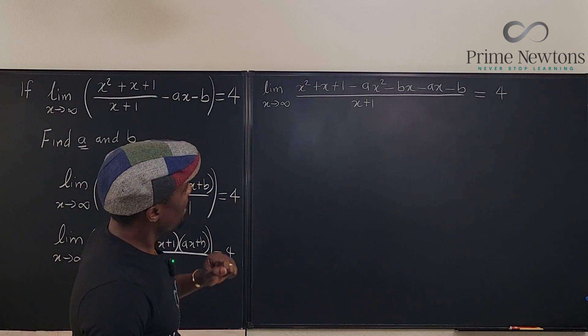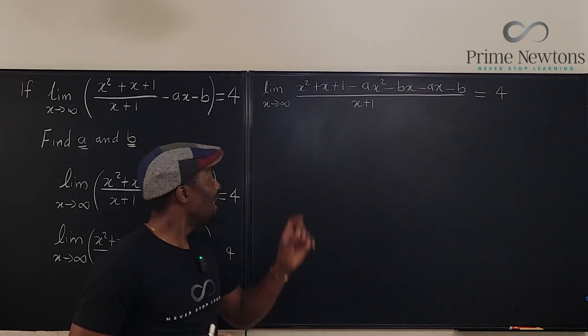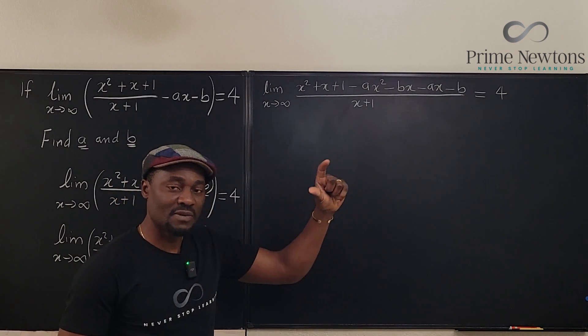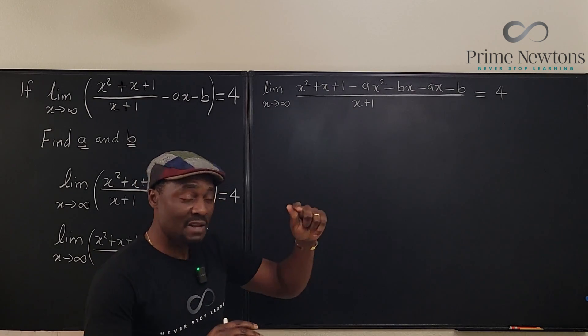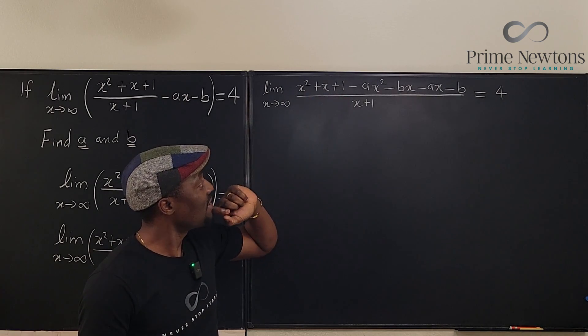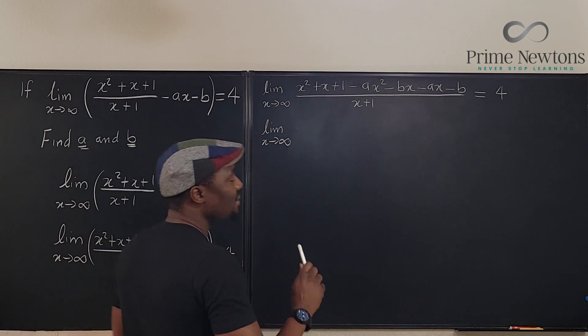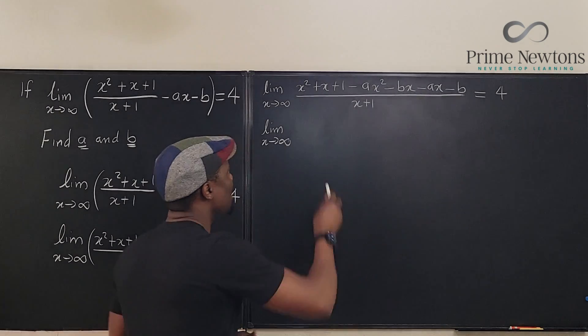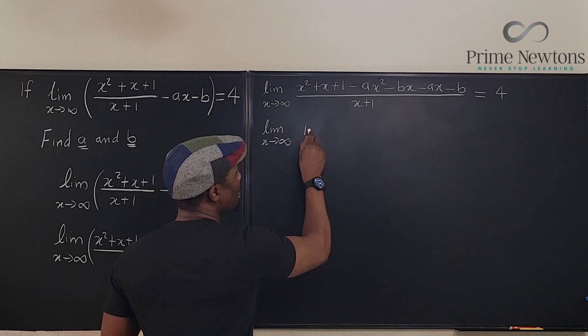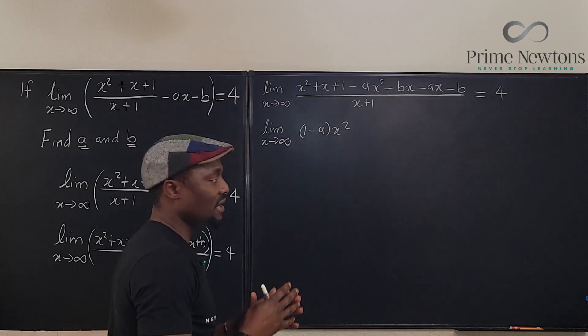Remember we're looking for a and b. When I take limits as x goes to infinity, I like to create fractions divided by the highest power in the denominator. Maybe I should collect like terms first. Every term that has x squared I'm going to put together. So I can say x squared minus ax squared, which is (1 minus a) x squared.